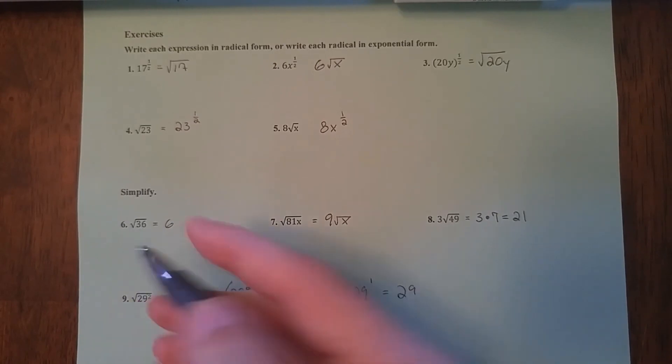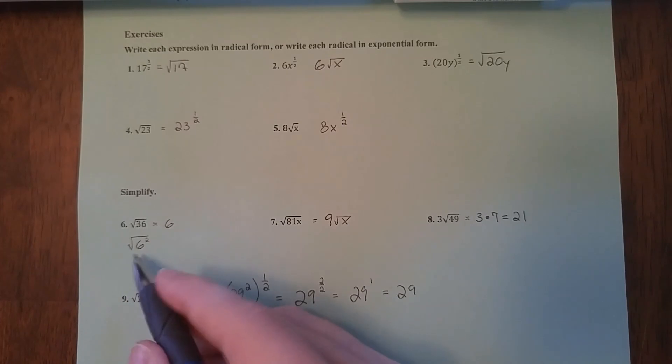So anytime you see something squared under a radical sign, it cancels out leading to 29. Just like this one right here, you could say this is 36, but I also could have wrote this problem like this, because 6 squared is 36, and the radical and the exponent 2 cancel each other out. Hopefully that makes sense, and good luck on your worksheet. Also, good luck on your quiz.